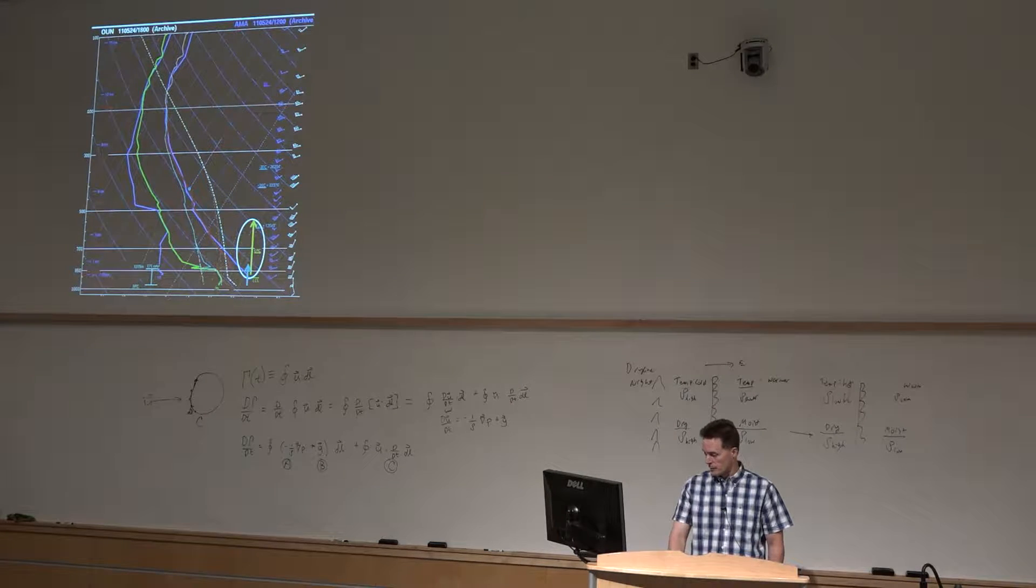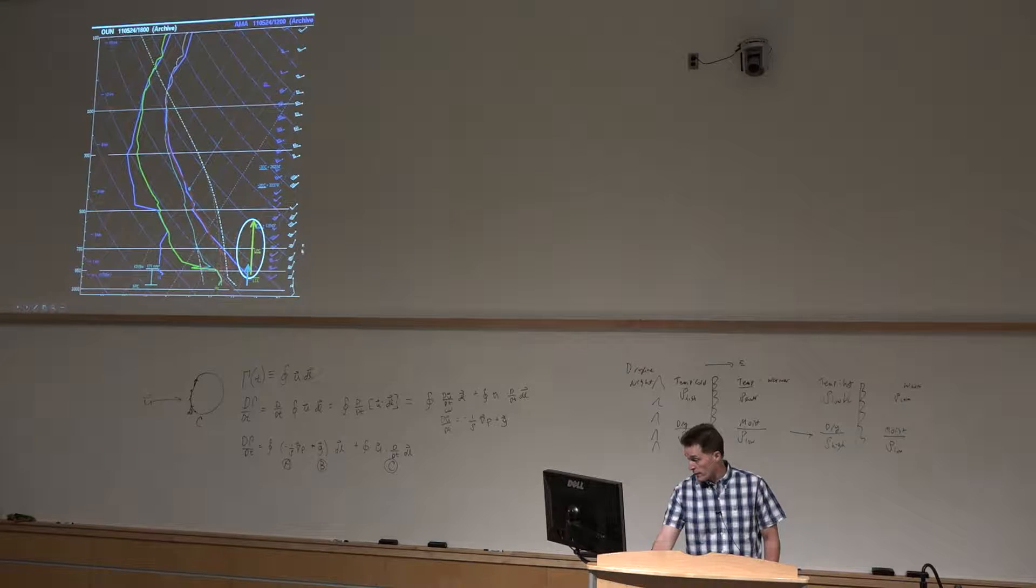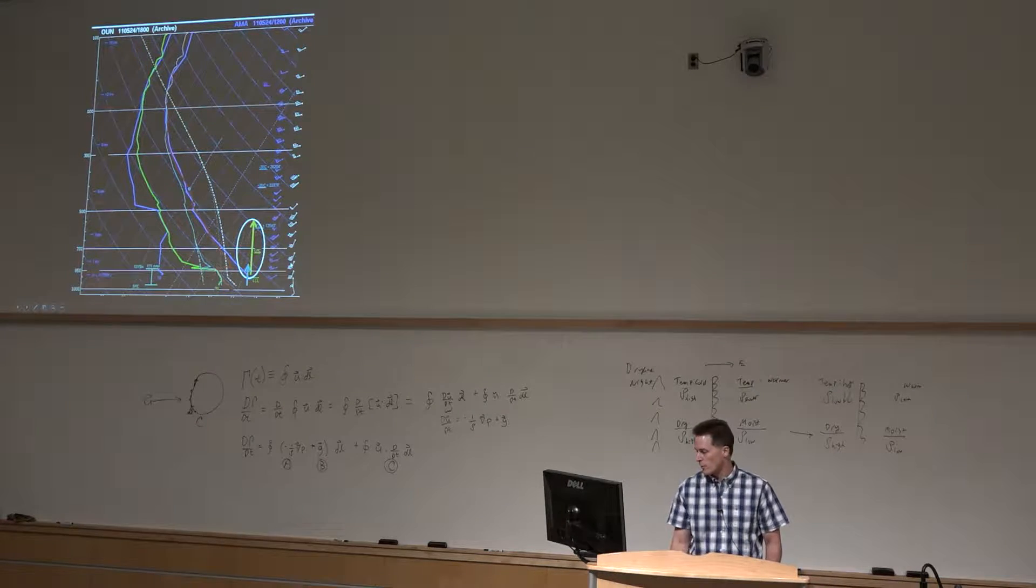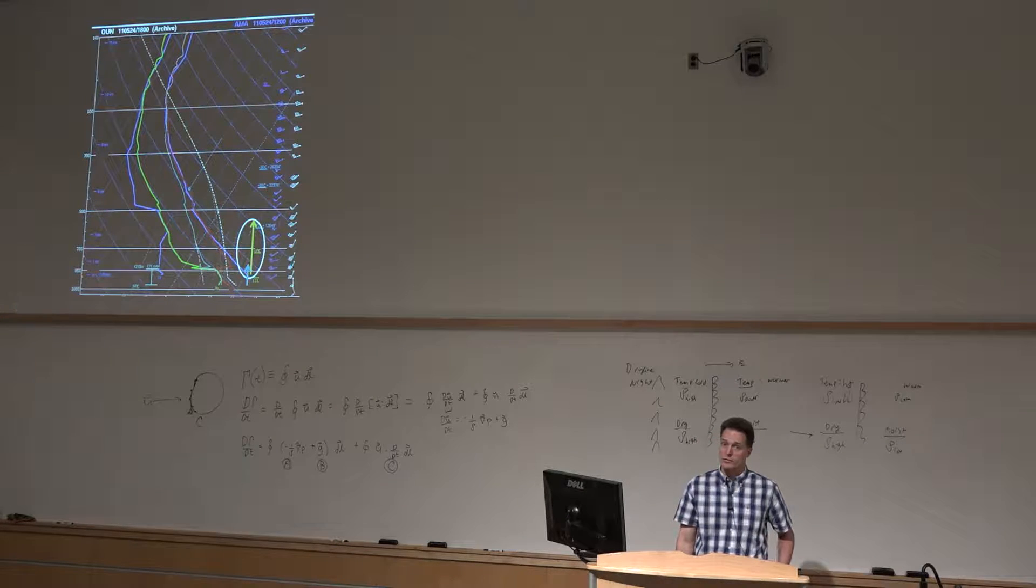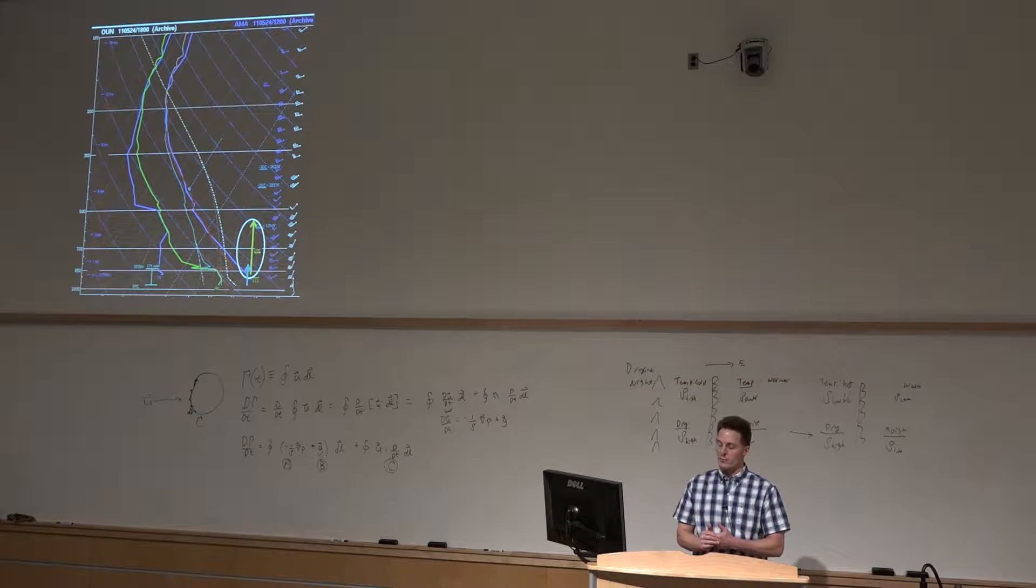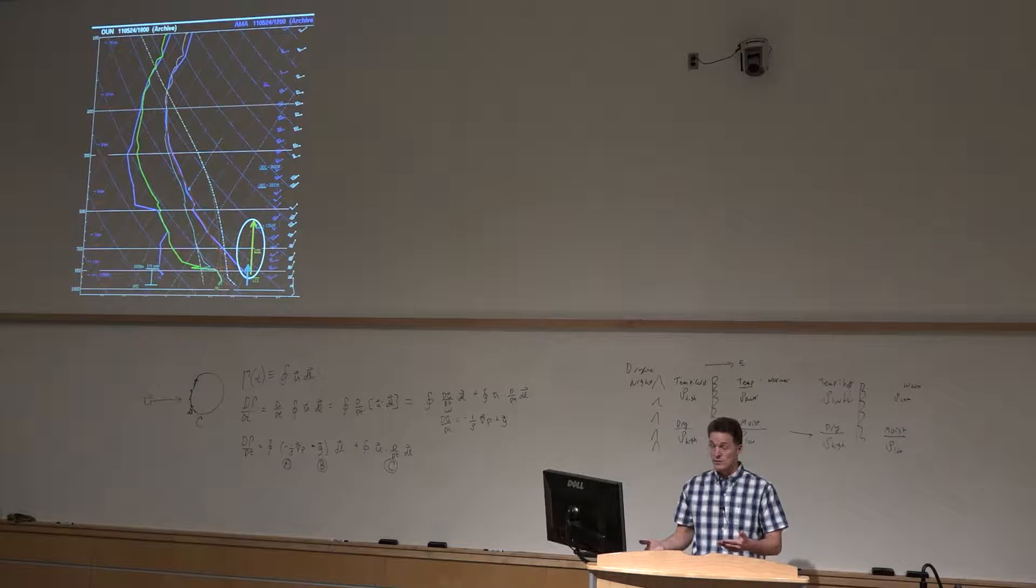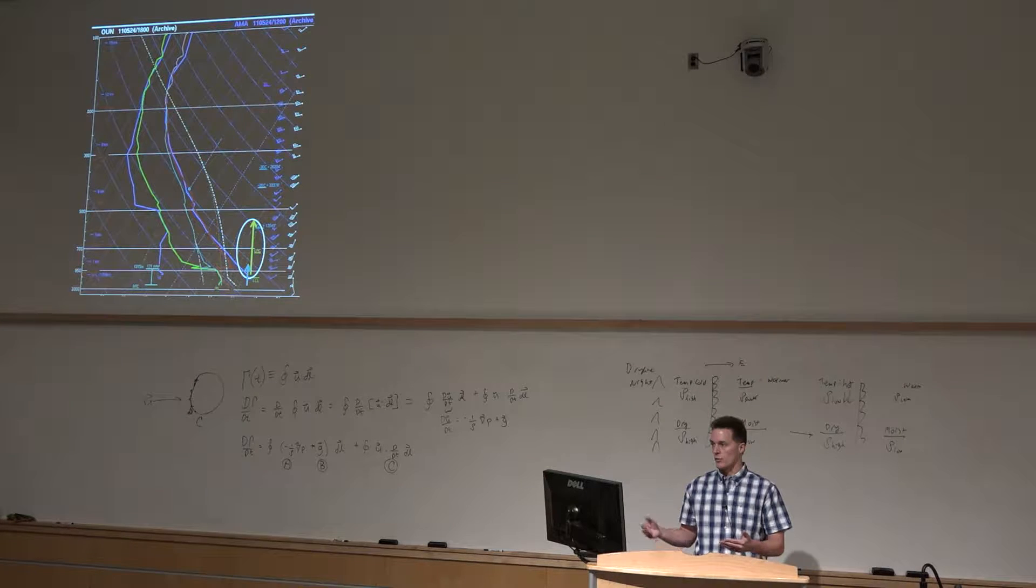Well looking at the soundings themselves, the Norman sounding representative of the moist side, the winds all the way up through 700 millibars are mostly south-southwesterly which is largely parallel to the orientation of the boundary. That would suggest a long residence time. So parcels go into the dry line circulation, they're moving northward along the dry line with time, they're ascending in that zone of lift and there's a much better chance that they're going to reach a level of free convection.